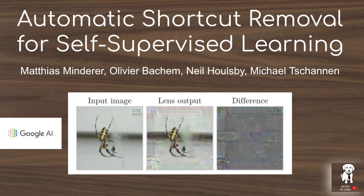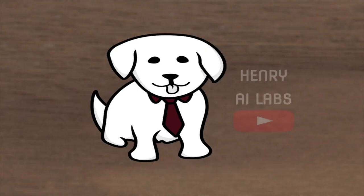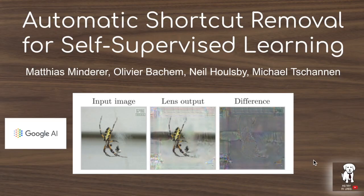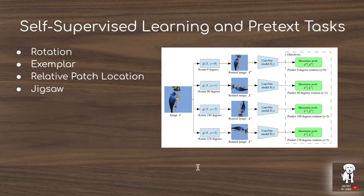This video will explain the details behind automatic shortcut removal, a technique from researchers at Google Brain, illustrated as an adversarial lens for input images in order to make sure that neural networks solving self-supervised learning tasks like rotation prediction are learning semantic features that are actually useful for applications like ImageNet classification. Self-supervised learning algorithms are enormously powerful for these data-hungry deep learning systems.